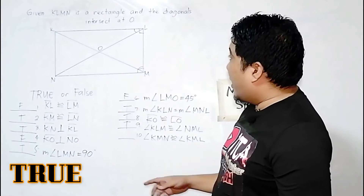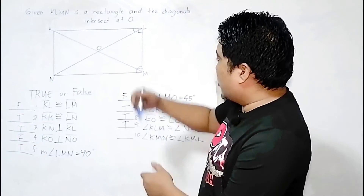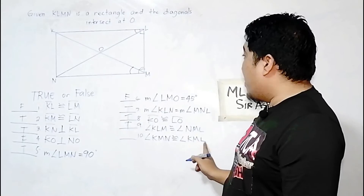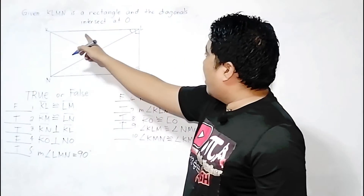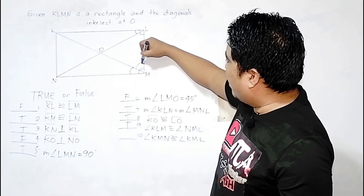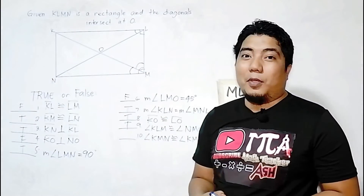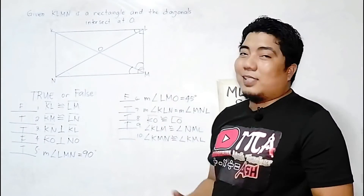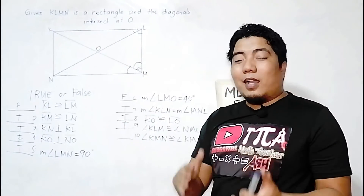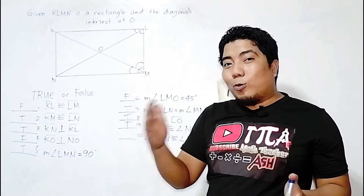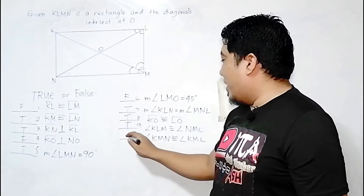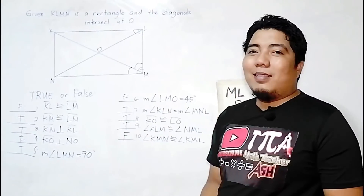Statement 10: Angle KMN is congruent to angle KML. There is no property supporting that a diagonal will cut the rectangle such that these two angles are congruent. Therefore, the last statement is false.